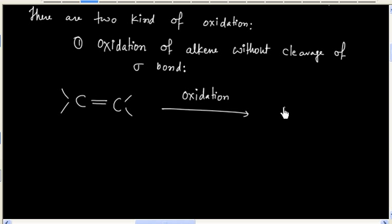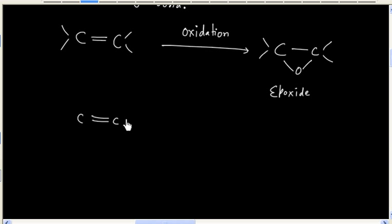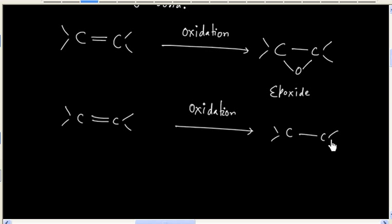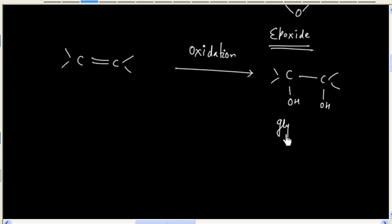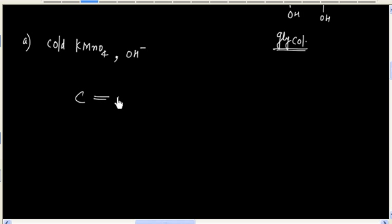When only the pi bond breaks and the sigma bond does not break, generally an epoxide or a glycol is formed. For example, we can use cold KMnO4 in an alkaline medium. In this case, the alkene can be oxidized to a glycol.